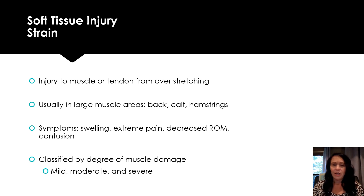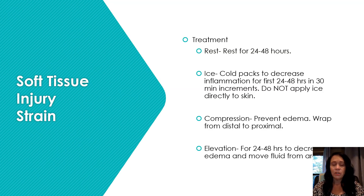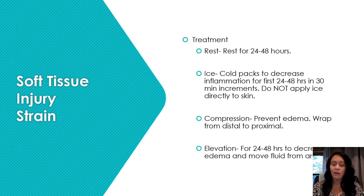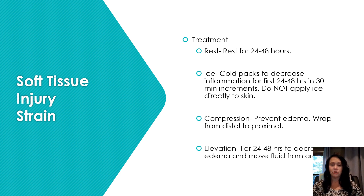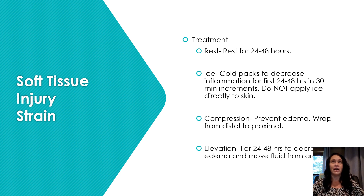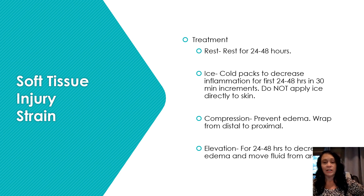Strain is classified by degree of muscle damage: mild, moderate, or severe. Treatment: rest for 24 to 48 hours, ice, and compress from distal to proximal. If it's the back, position the patient with a pillow so they can sit up straight and not bend over — bending over tends to make matters worse. A lot of people want heat, but ice to the muscle is the best thing.